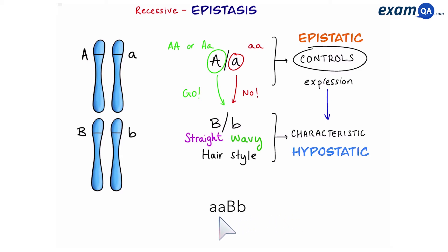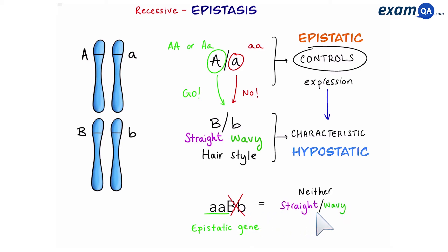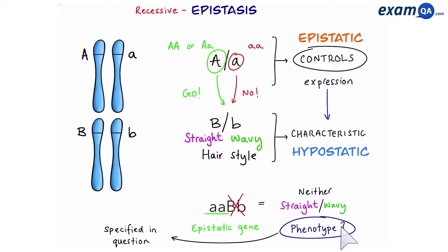One final example: what about if someone had two small a's and big B small b? Reading the epistatic gene, we see that overall it is recessive, which means don't go to the next gene — it will not be expressed. So it doesn't matter whether the next gene is dominant or recessive; neither will be expressed. The hair will be neither straight nor wavy.